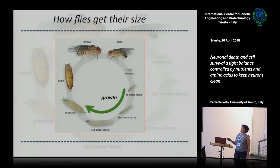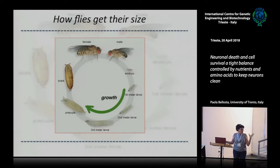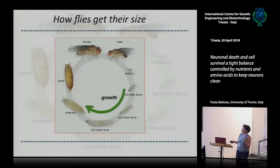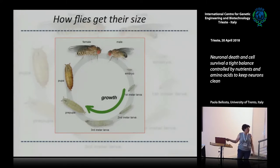At 25 degrees, flies take 10 days to develop from egg to adult. Importantly, growth happens only during the larval stage. If you interfere with this part of development, you will end up with an animal that is either too small or too big, depending on what you are doing. But growth doesn't happen without us — so if you want to study growth, you have to work in this part of the cycle.